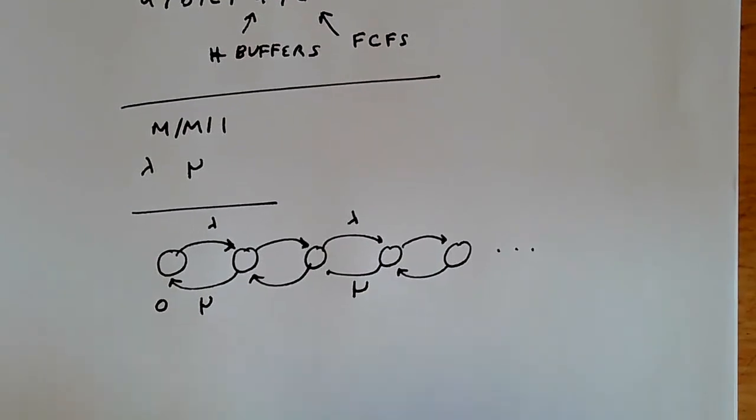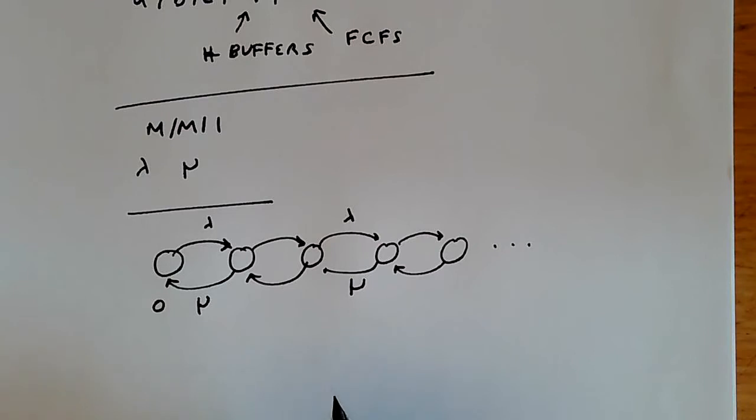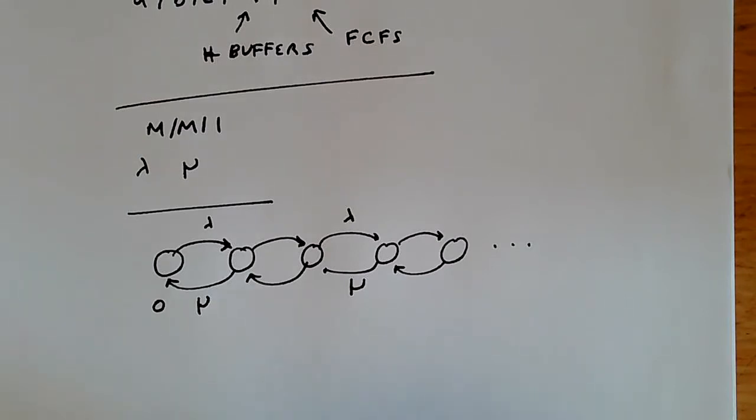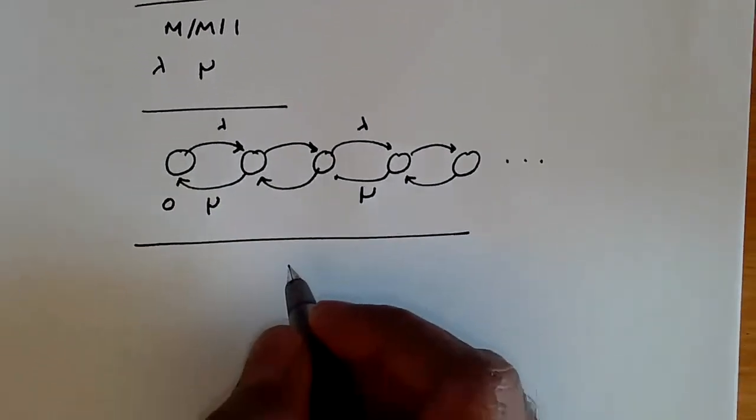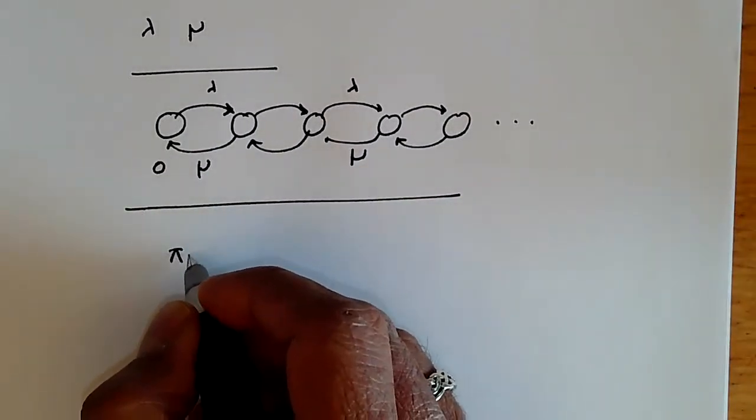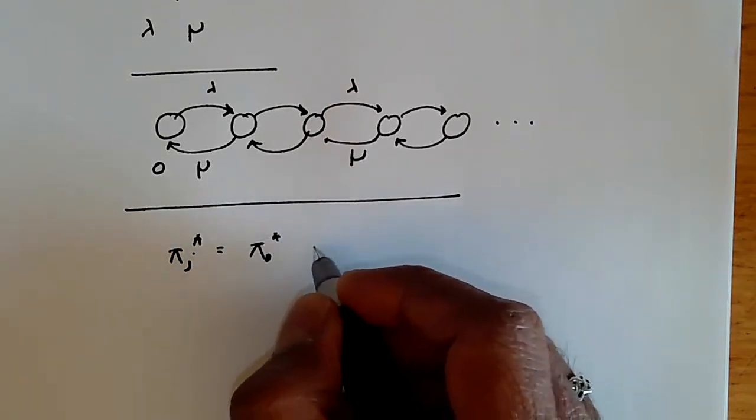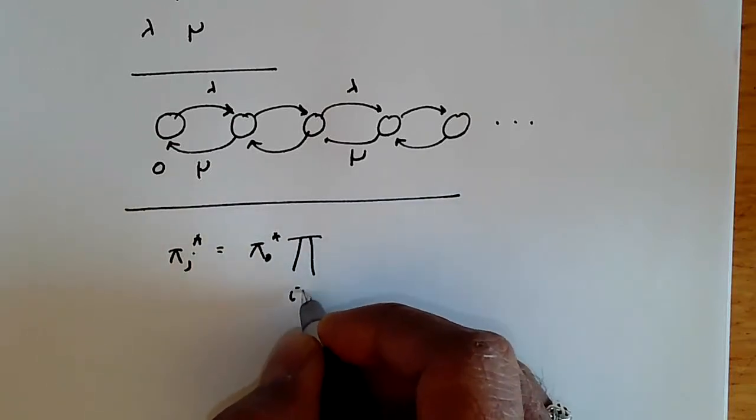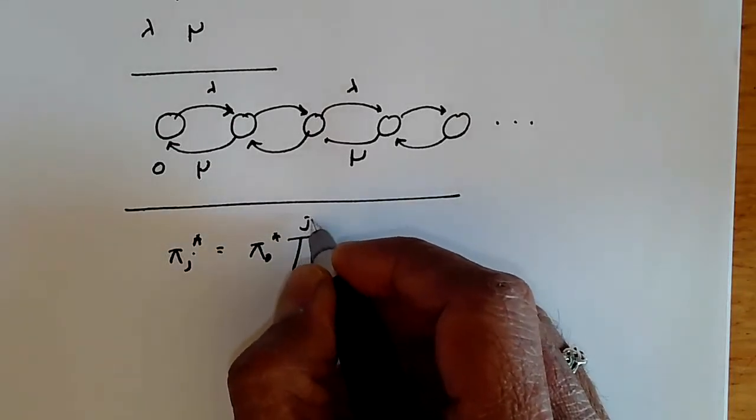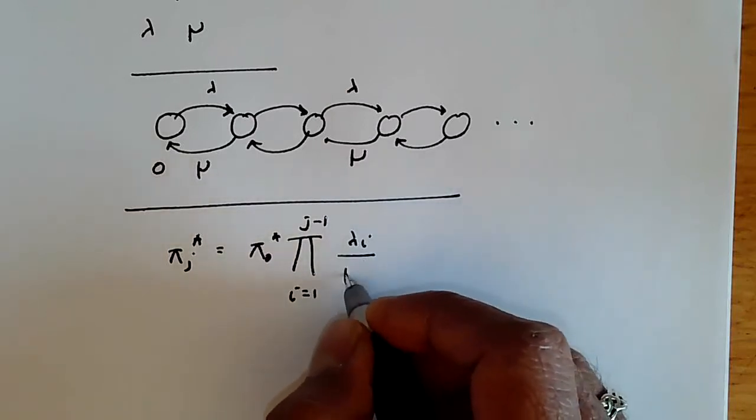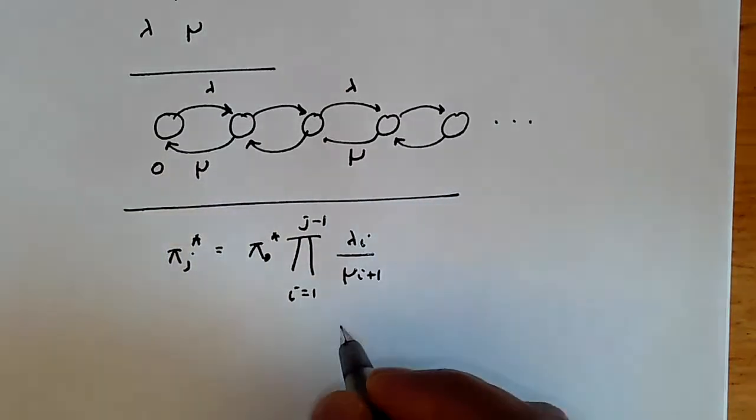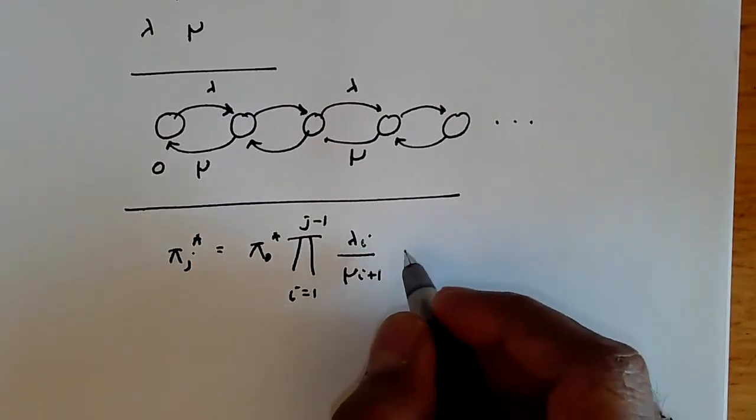To study this, we use the theory we built up for birth-death processes. Remember that for a birth-death process, the pi j star, the probability of being in state j, is given by this equation which we looked at earlier. Pi j star is pi zero star times the product i equals 1 to j minus 1 of lambda i by mu i plus 1. This is assuming that all the lambdas and mu's are different.